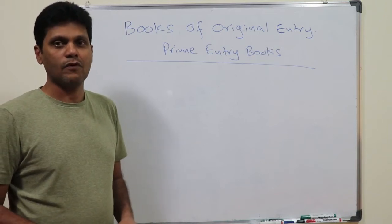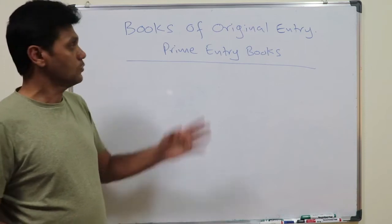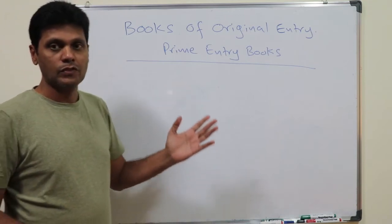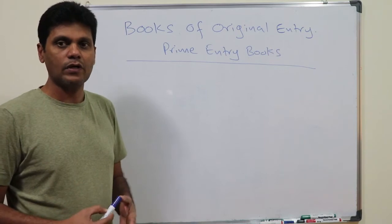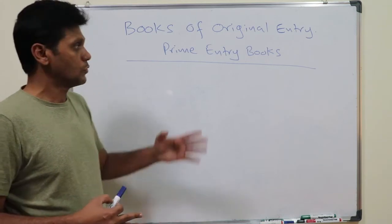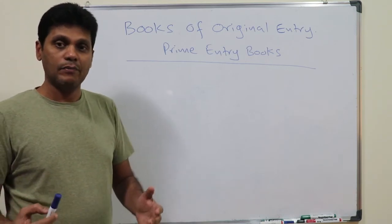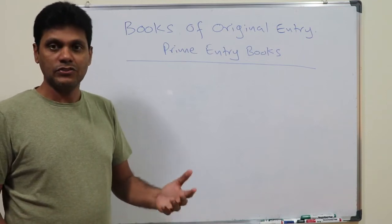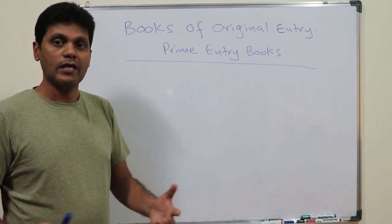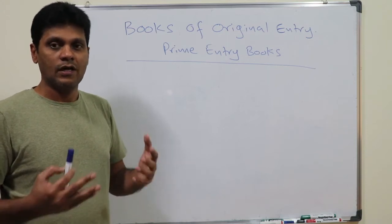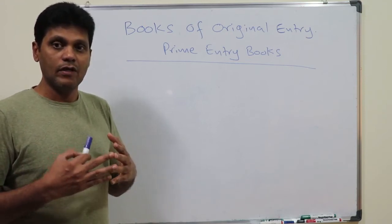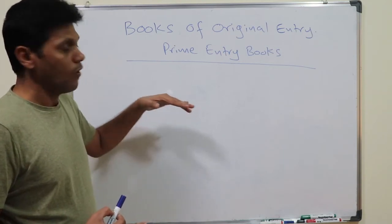Today I am going to discuss books of original entry, also called primary books. These are the books a company or business organization maintains to record different types of transactions. In a business organization there can be different types of transactions — cash sales, credit sales, cash purchases, credit purchases — and these transactions will first be recorded in the books of original entry.